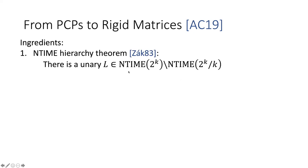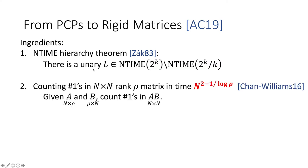The first ingredient is the non-deterministic time hierarchy theorem, which simply states that there is a language that can be decided in exponential time with exponential length witness, but you can't shave even a logarithmic factor off of its decision time and witness complexity. And furthermore, it's convenient that this language is unary. So the yes cases are all one strings. A second component is a very fast counting algorithm. And what does it count?